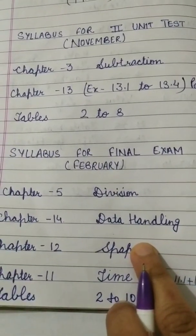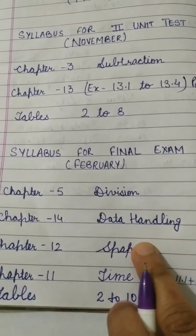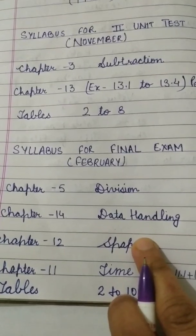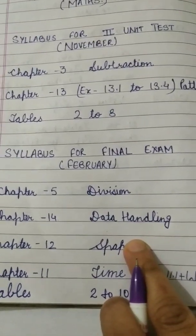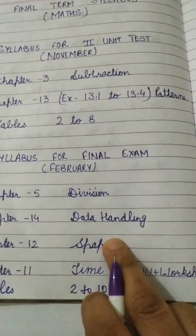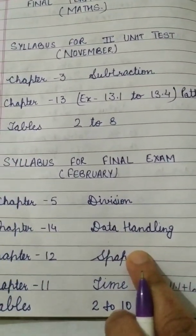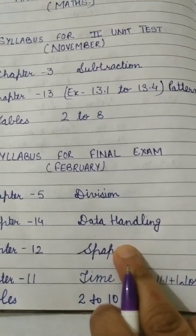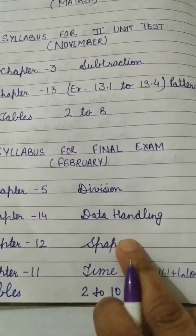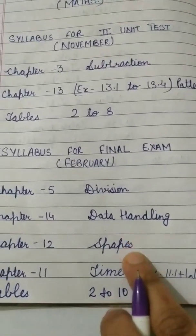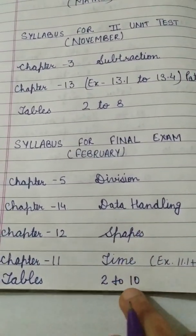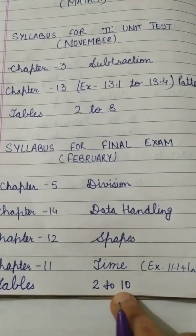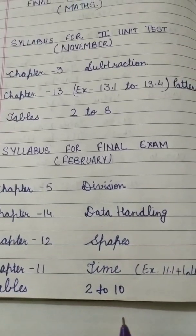Children, you are supposed to do the worksheet of each chapter very thoroughly so that you get exam experience, because the questions in the exam will be set from inside the chapter. You have to be very thorough with all the chapters. The tables required are 2 to 10.